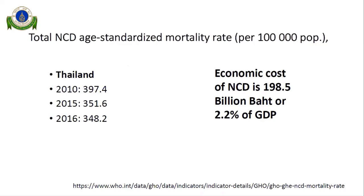For Thailand, according to MOPH statistics, the age-standardized mortality rate for NCD declined slightly from about 397 per 100,000 population in 2010, down to 351 in 2015 and 348 in 2016. I have to say that finding this figure is quite inconsistent when we look at other sources, and it's not easy to get this information — so improving our data is something we need to address.